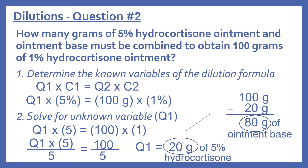The question also asks for how much ointment base. We know we need 20 grams of 5% hydrocortisone ointment and we're making a total of 100 grams. So 100 grams minus 20 grams gives us 80 grams of ointment base. To prepare this, we add 20 grams of the 5% hydrocortisone ointment and 80 grams of ointment base, giving a total of 100 grams of 1% hydrocortisone ointment.